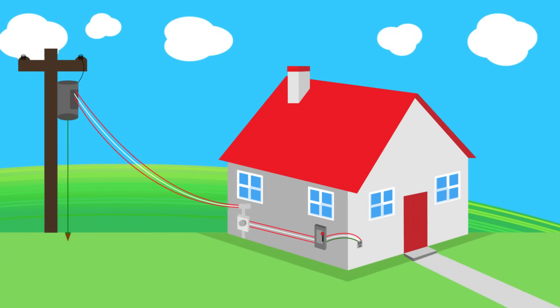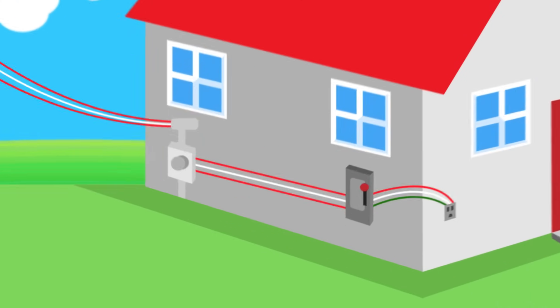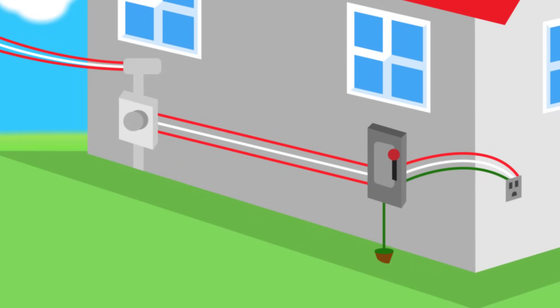To prevent this, a third ground wire is connected from your breaker box and is driven straight into the earth. Now, when that same lightning strikes your system, the excess energy is directed into the land instead.